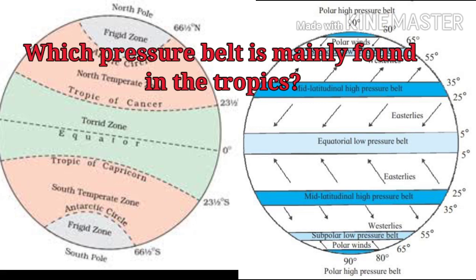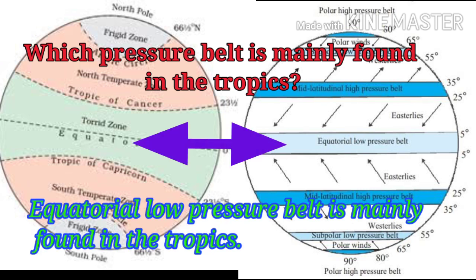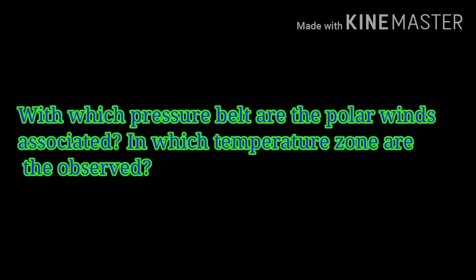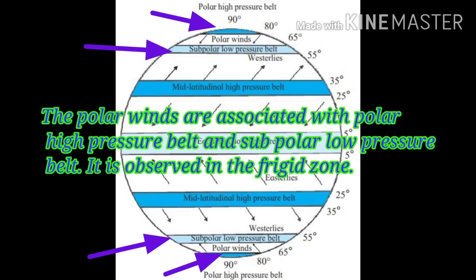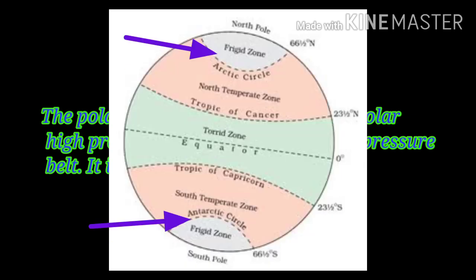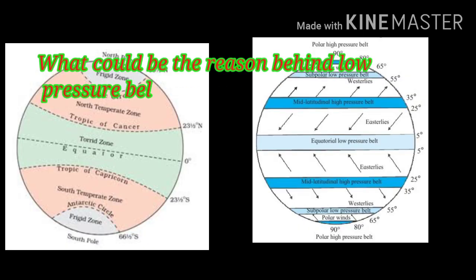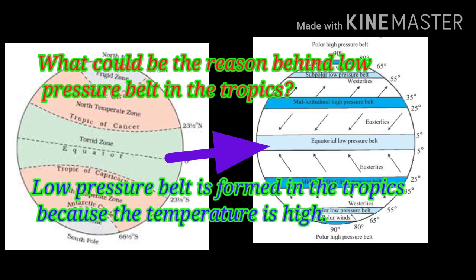Which pressure belt is mainly found in the tropics? The equatorial low pressure belt is mainly found in the tropics. With which pressure belt are the polar winds associated, and in which temperature zone are they observed? The polar winds are associated with the polar high pressure belt and the subpolar low pressure belt, observed in the frigid zone. What could be the reason behind a low pressure belt in the tropics? Because the temperature is high.